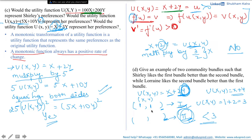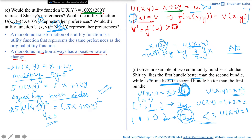To make the second bundle's utility less than 3, let's reduce the value of one of the goods — say reduce y to 0, keeping x as 1. That gives us the second bundle (1,0), and Shirley's utility is x plus 2y equals 1. So Shirley prefers (1,1) over (1,0). But we also need to satisfy the condition that Lorraine likes the second bundle better.